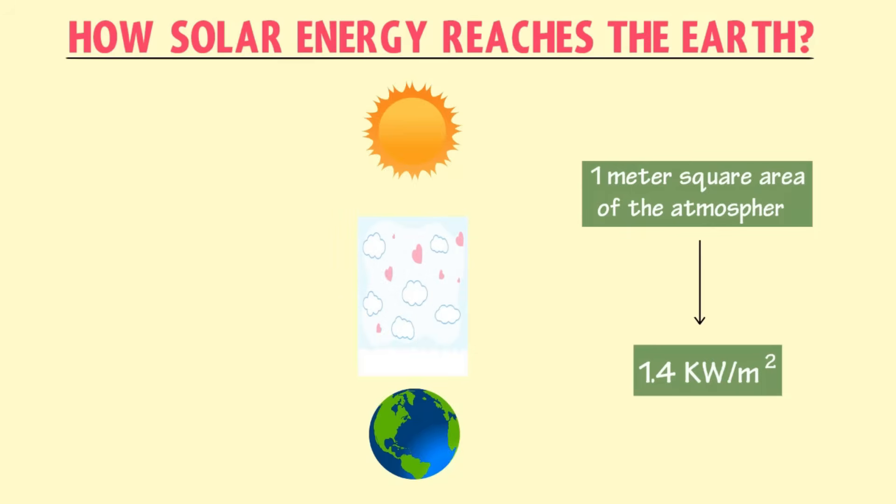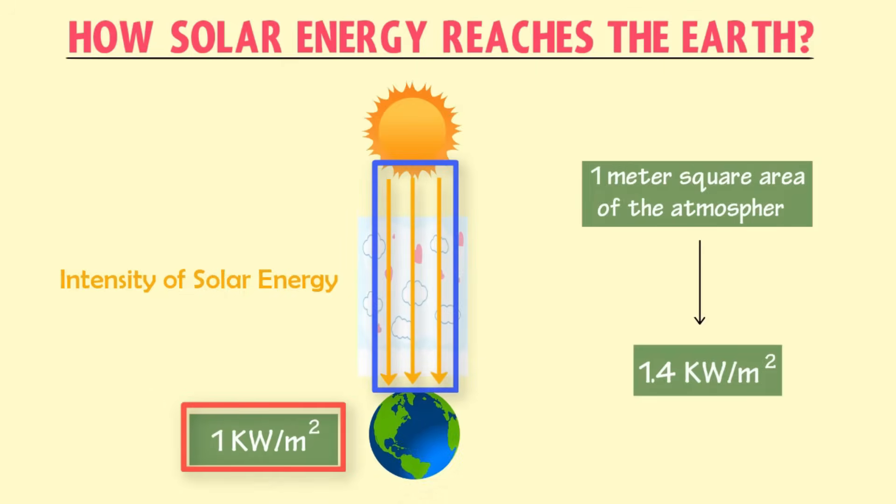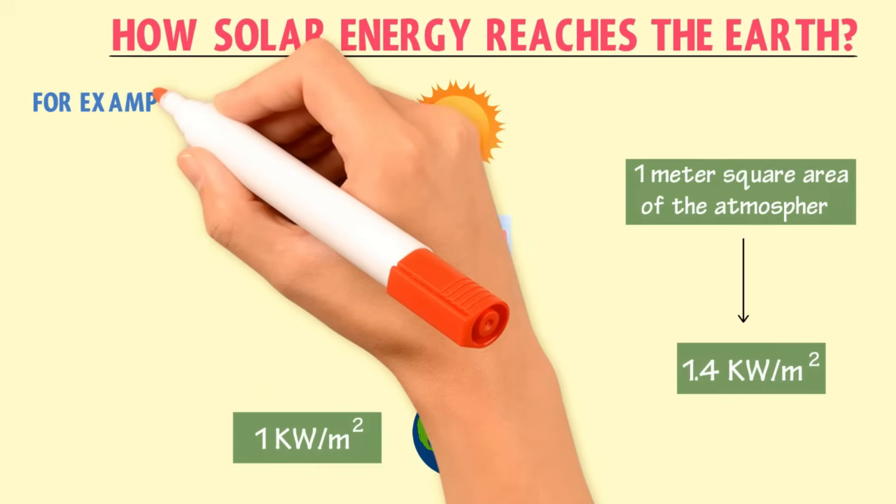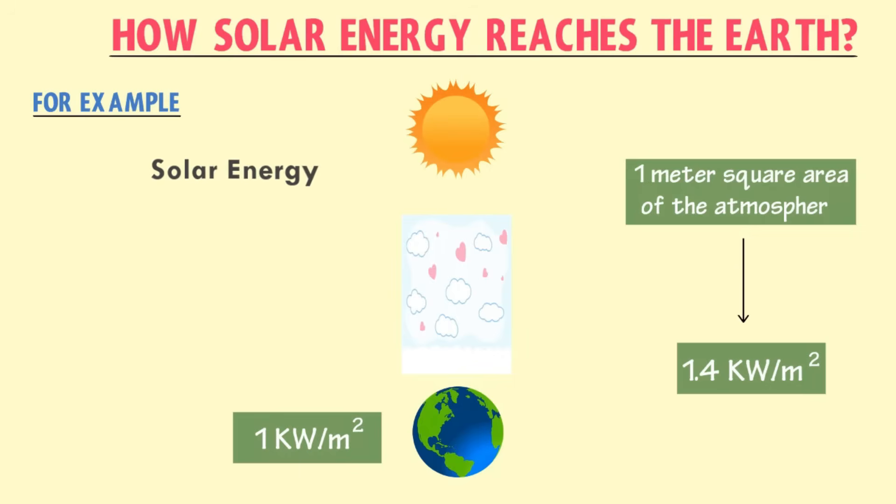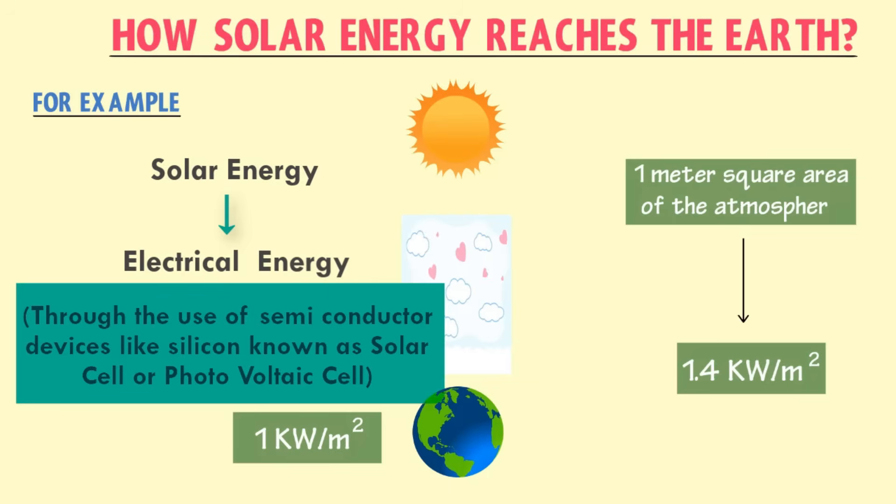On a clear day, at noon, the intensity of solar energy reaching the Earth is about 1 kilowatt per meter square. Hence, this energy can be converted or used to heat water or produce electrical energy. For example, we can convert solar energy into electrical energy through the use of semiconductor devices like silicon. These are called solar cells. Solar cells are also known as photovoltaic cells.